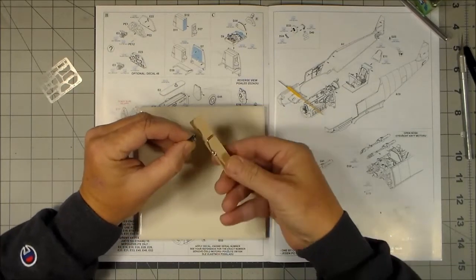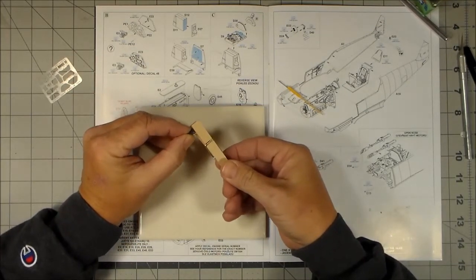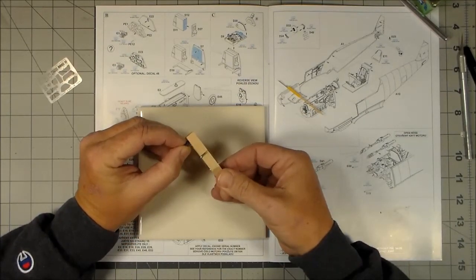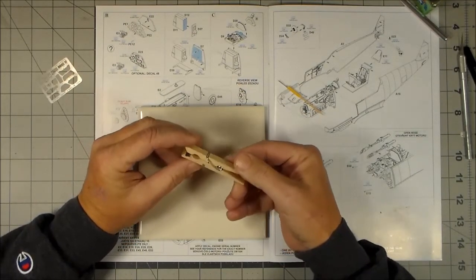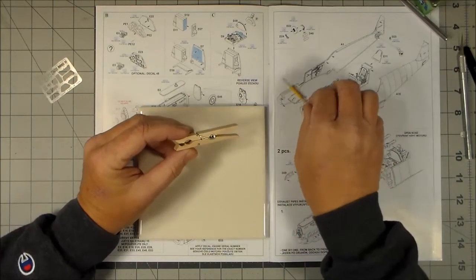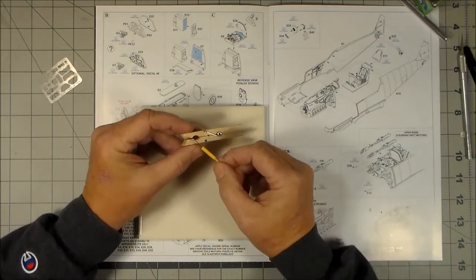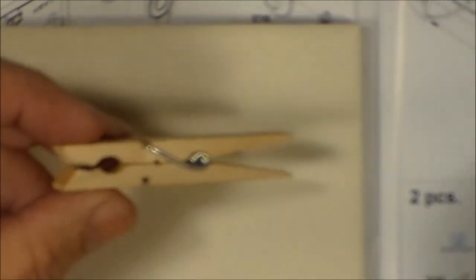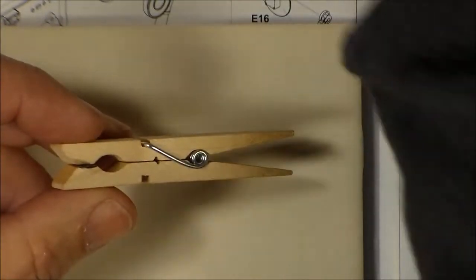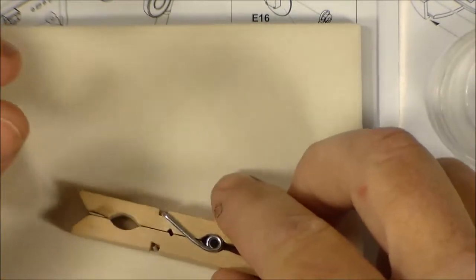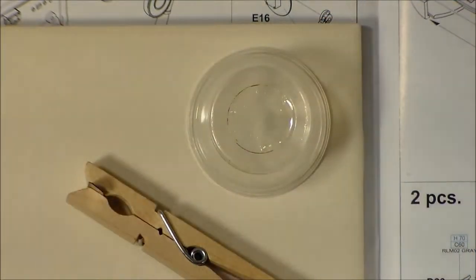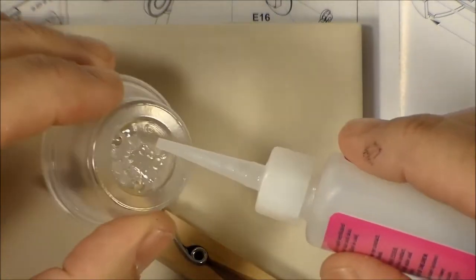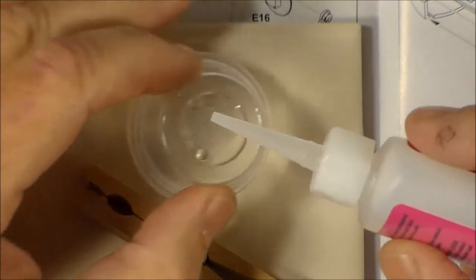I take a clothespin and clamp one side of it. What it'll do is it'll just spread the edge ever so slightly. Then what I do is I put some of my thin super glue on here.